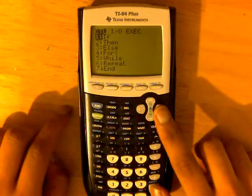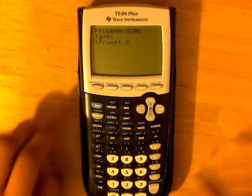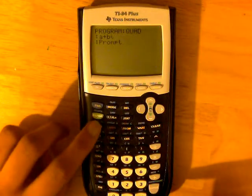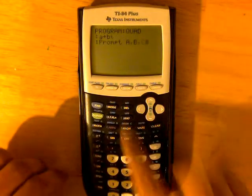Slide all the way over to I-slash-O, and click Prompt, Enter. And then do Alpha-A, Alpha-B, Alpha-C.